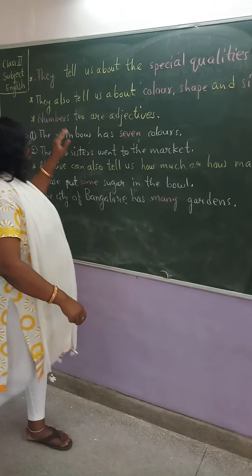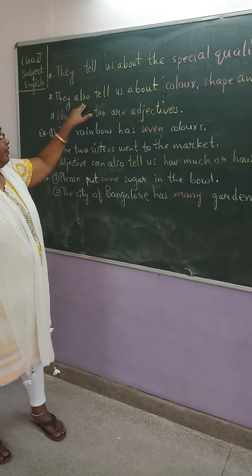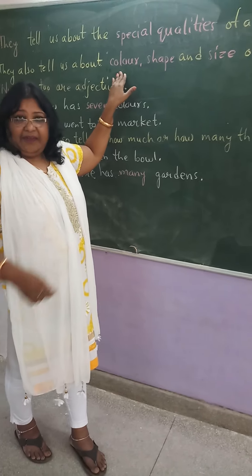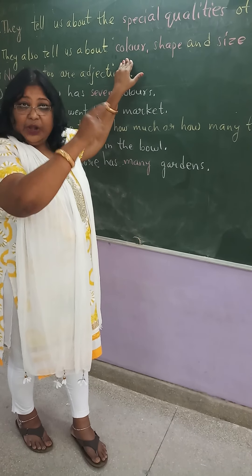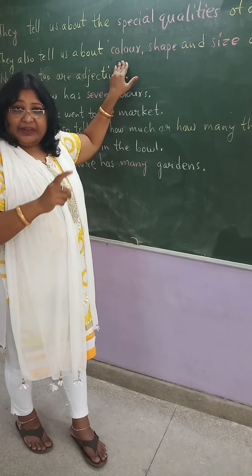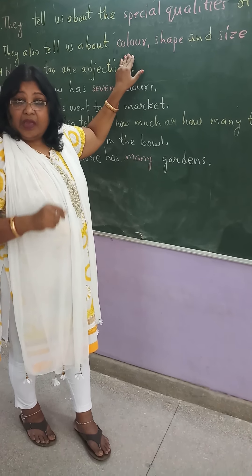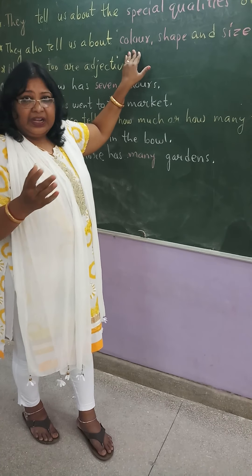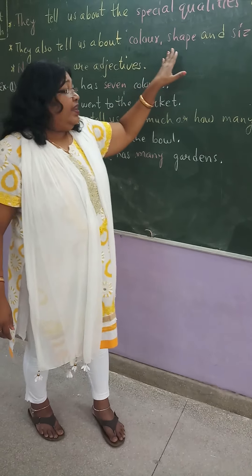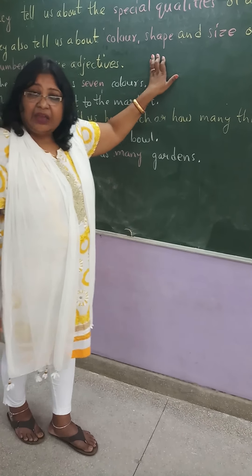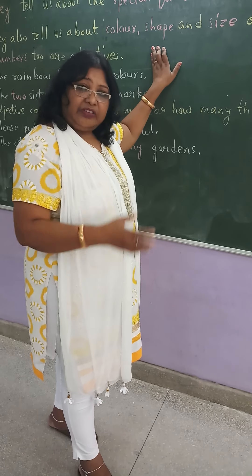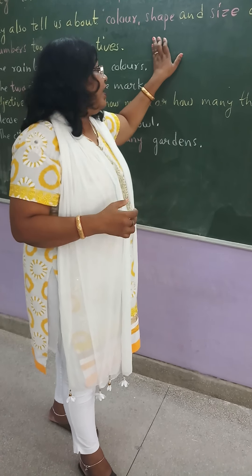Describing words also tell us about colors — what the color is. You have learnt about yellow sunflowers, red roses, white lilies. Different colors. And shape also — round, square, triangle. Whatever shape it is, that is also a describing word.